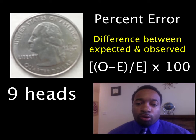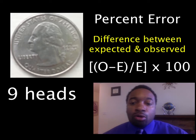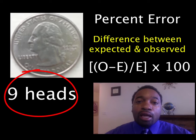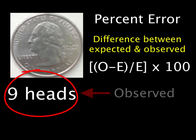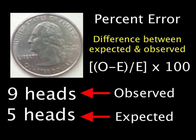So we think about observed — what's observed? That's exactly what we got in our experiment. So for observed, we would say nine, because we got nine heads. Now expected is what you expected to get. Knowing that there are two sides to a coin and you flip it 10 times, you expected five times to get heads and five times to get tails. But in this case we're looking at the percent error of heads, so we have expected as five.